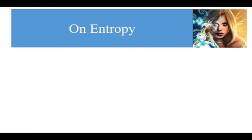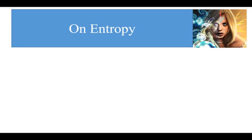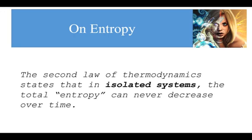Let's start with a typical mainstream definition of entropy. Entropy is a measure of the unavailable energy in a closed thermodynamic system, which is usually considered to be a measure of the system's disorder. This definition is only for closed thermodynamic systems, and entropy is generally associated with a move from an ordered system to a disordered system. The second law of thermodynamics states that in isolated systems, the total entropy can never decrease over time.